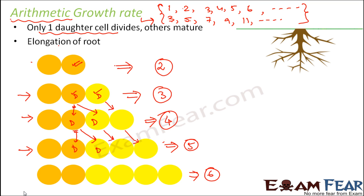This kind of growth rate is seen in the elongation of the root. At the root tip you have the meristematic zone, after that the elongation zone, and then the maturation zone. The elongation of the root happens by this type of growth rate — arithmetic growth rate.